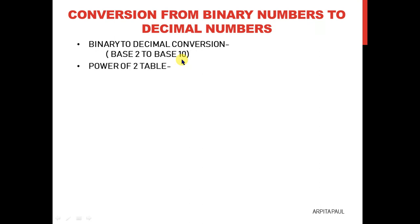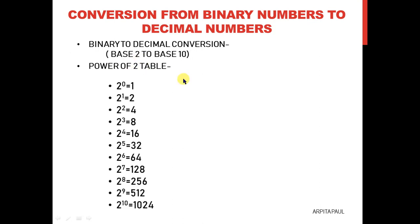For that you need the power of 2 table. Like in your childhood you have memorized and learned multiplication tables, same way here, to convert from binary to decimal you have to memorize the power of 2 table. It starts from the power 0 and continues up to 10. There are more powers but for this conversion you only need from 0 to 10.